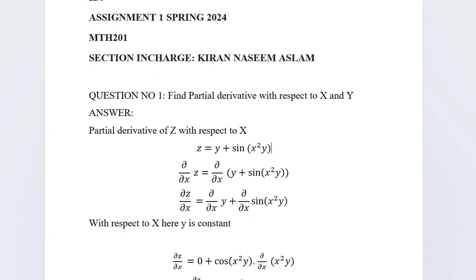First we find the partial derivative with respect to x, then with respect to y. When finding a partial derivative, we treat all other variables as constant. Consider the given function: z = y + sin(x²y).